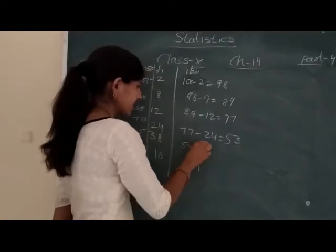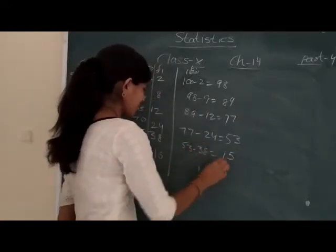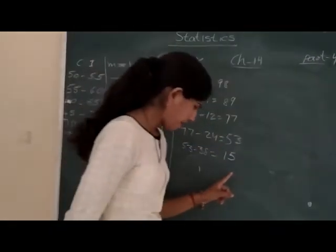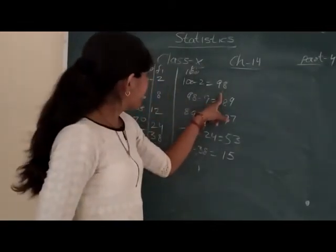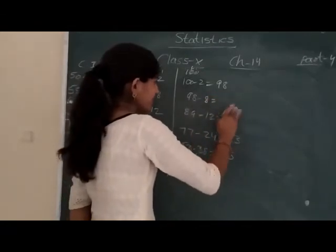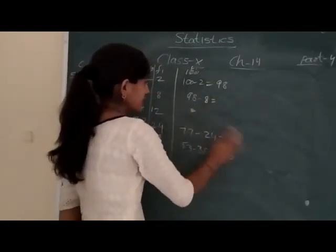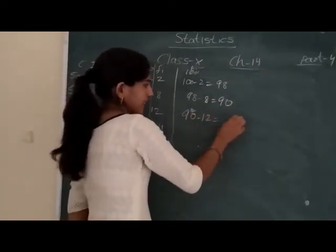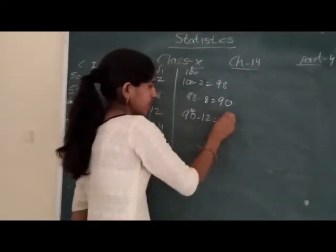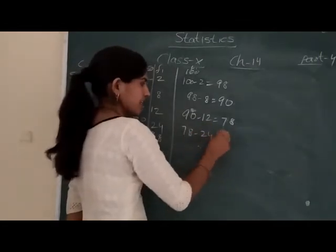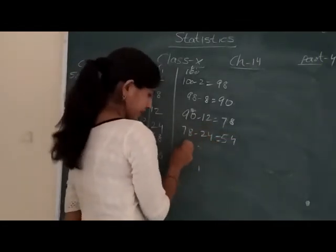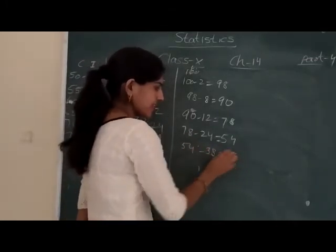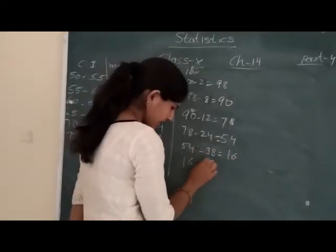Wait, there's a calculation mistake. Let me check. Ninety-eight minus eight is ninety. Ninety minus twelve is seventy-eight. Seventy-eight minus twenty-four is fifty-four. Fifty-four minus thirty-eight is sixteen. And sixteen minus sixteen is zero.